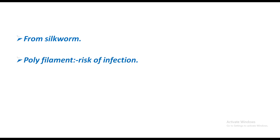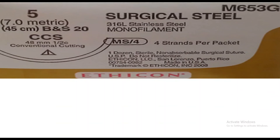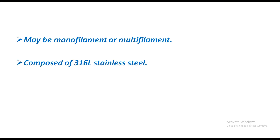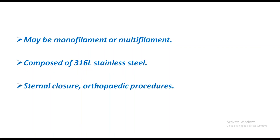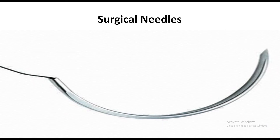Silk is black in color, obtained from silkworm, and is polyfilament — so chances of infection are higher and tissue reaction is high. It is used in tying bleeding vessels and tying the pedicle of any organ, for example the renal pedicle. Steel may be monofilament or multifilament, is composed of 316L stainless steel, and is used in sternal closure and orthopedic procedures.